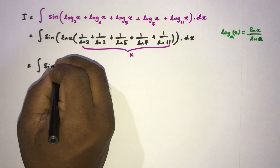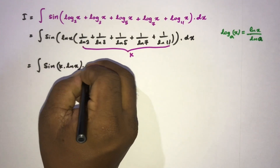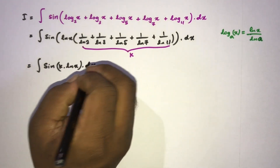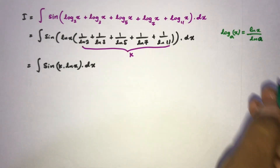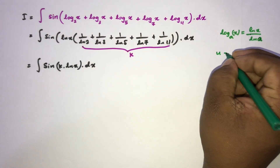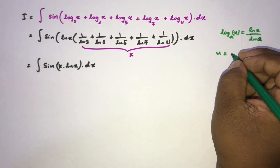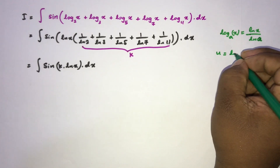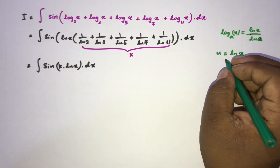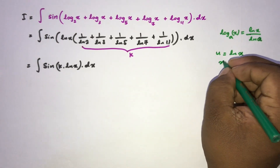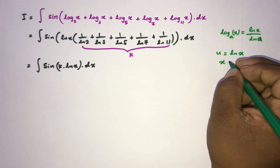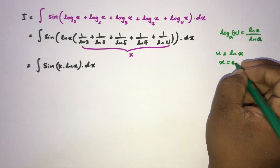Now I'll apply a substitution. Let u equal the natural log of x, so that x equals e to the u. Differentiating, du equals 1 over x dx, which means dx equals x du equals e to the u du.